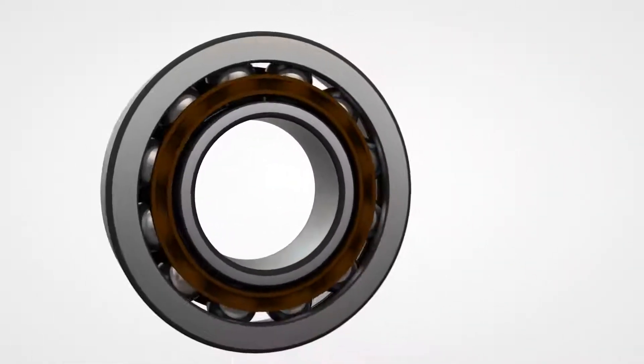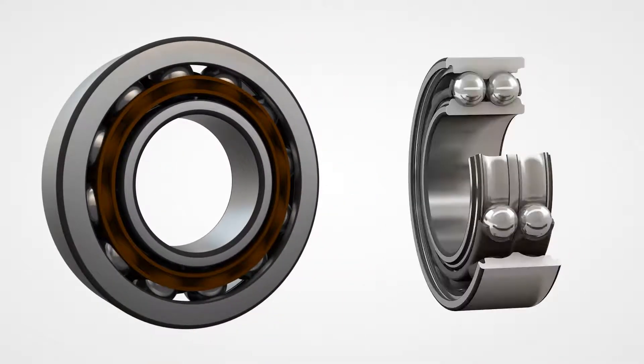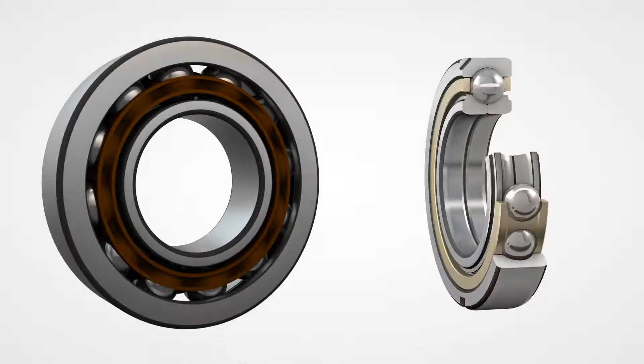Other bearings in this family are the double row angular contact bearing, which is always arranged in a back-to-back configuration, and the four-point bearing which can only be used for axial loads.